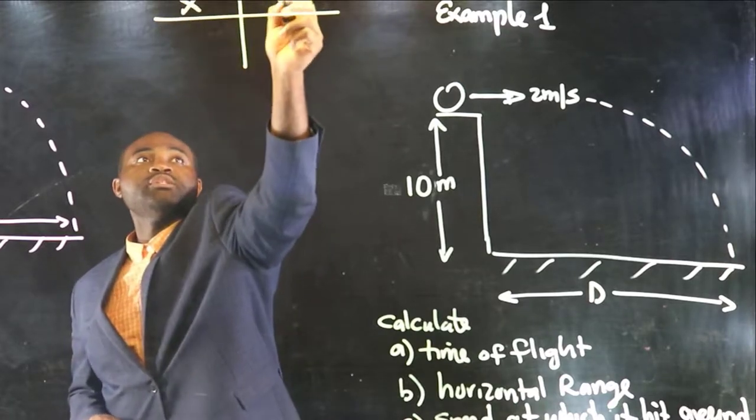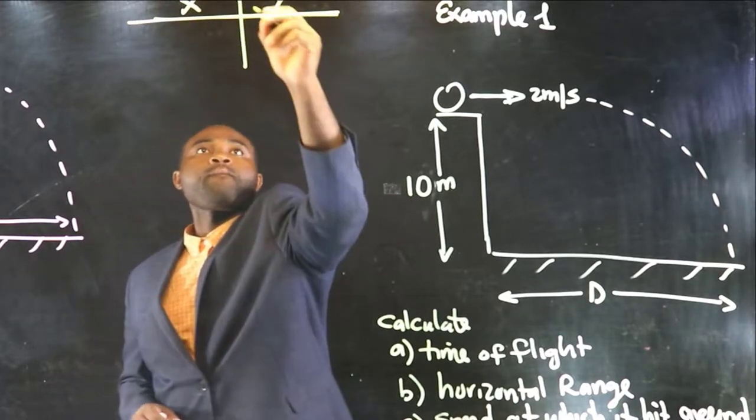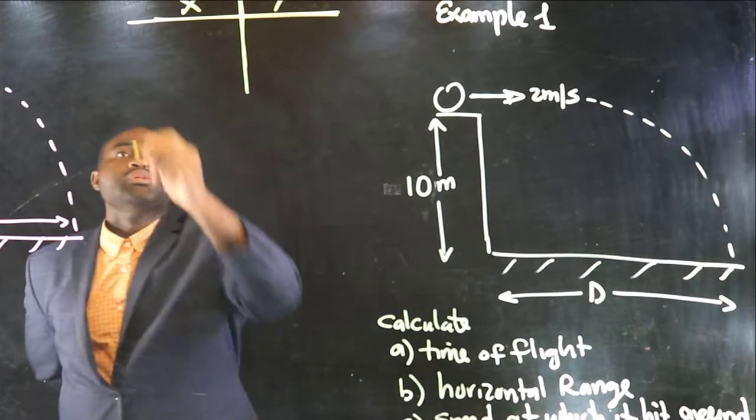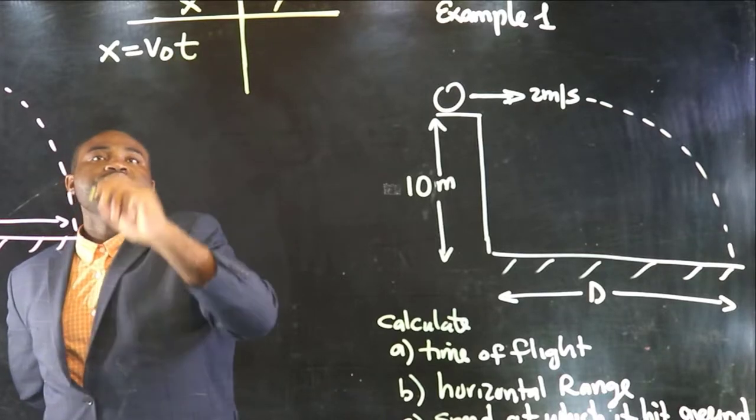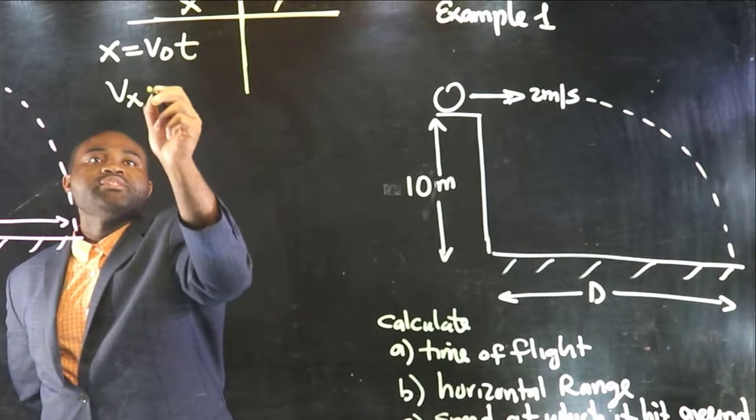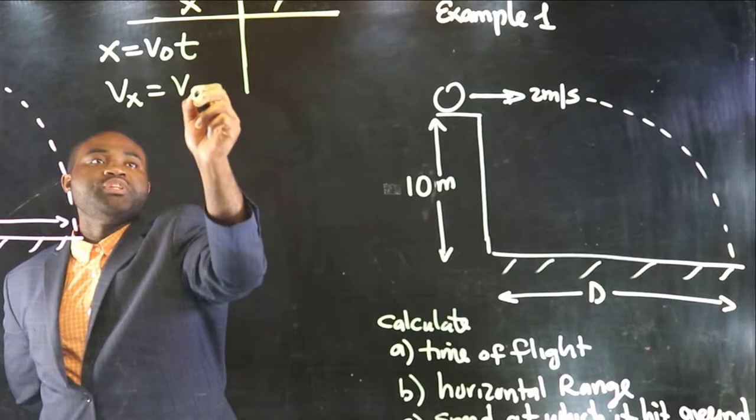This is x and this is y. Your x is equal to v naught t. Vx is just going to be equal to v naught.